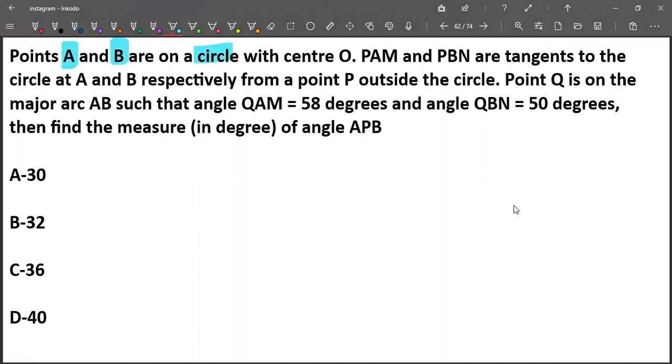There are two points A and B on a circle with center O. PAM and PBN are tangents to the circle at A and B respectively from a point P outside the circle. Point Q is on the major arc AB, and given that angle QAM is 58 degrees and angle QBN is 50 degrees, we are asked to find angle APB.